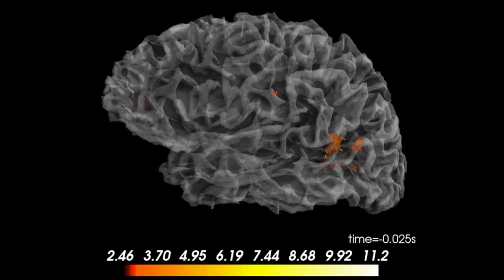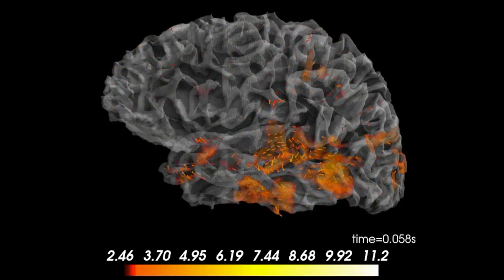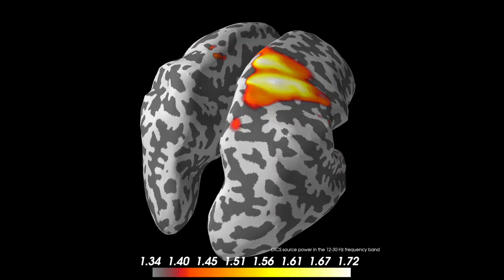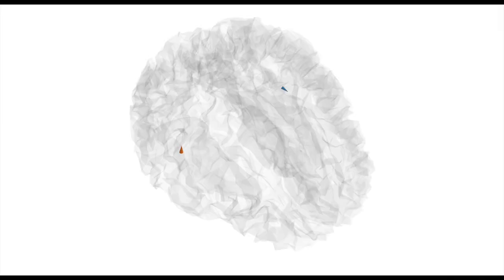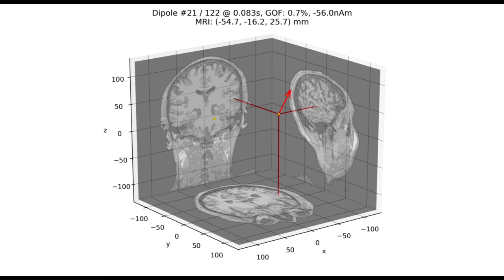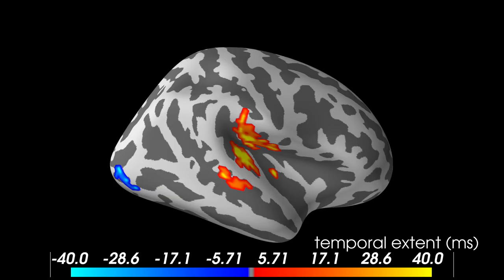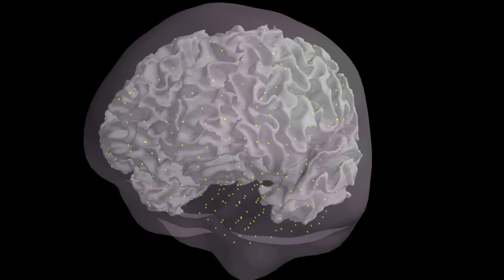And when it comes to the actual source localization, there are so many ways to do it. Use cluster permutation testing for group level statistics, and so much more.